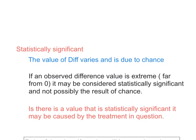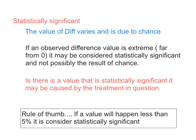So statistically significant, here is a big topic. The value of a difference varies and is due to chance. Okay, so that's key. Everything's due to chance. However, if an observed difference value is extreme or far from zero, it may be considered statistically significant and not possibly the result of chance. Let's star that, box that in. This is huge.